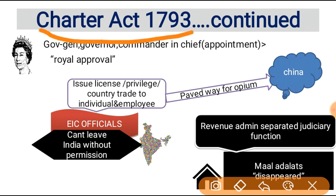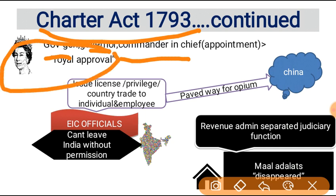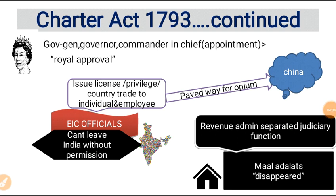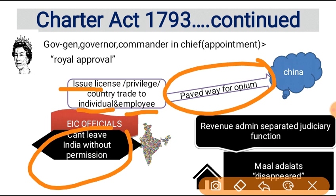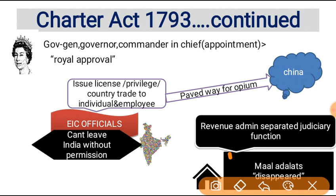Charter Act 1793 is related to other points like: Governor General and Governor commander-in-chief appointments required royal approval — that is, approval of the Crown and Queen. Officials were not permitted to keep private trade from India. The revenue administration was separated from the judiciary function for the first time.